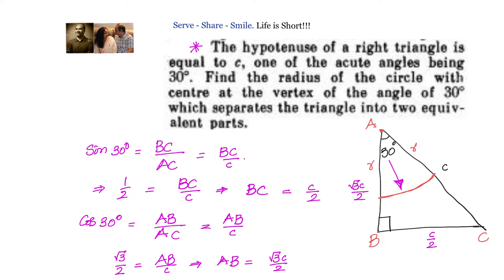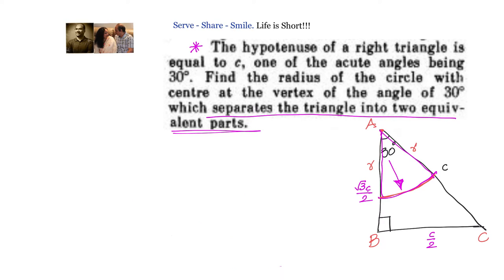Now we can calculate the area of the triangle. The problem states the circle separates the triangle into two equivalent parts, which means the area of this sector should be equal to half the area of the triangle. We know the lengths of the legs of the right triangle, so we can find the area. We write: area of the sector = (1/2) × area of triangle ABC.